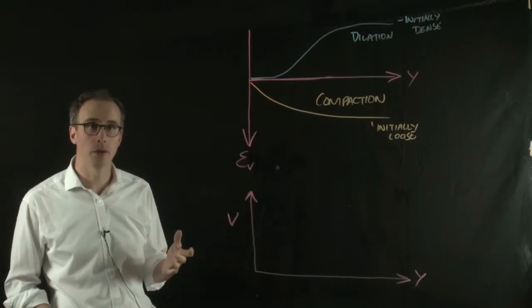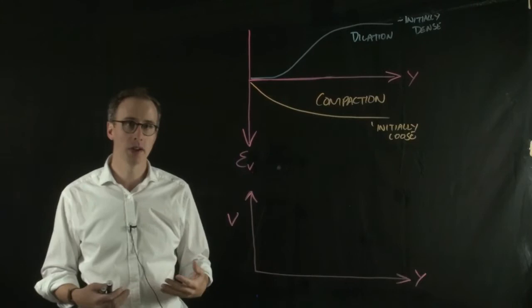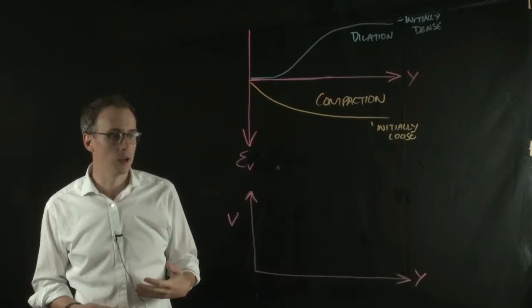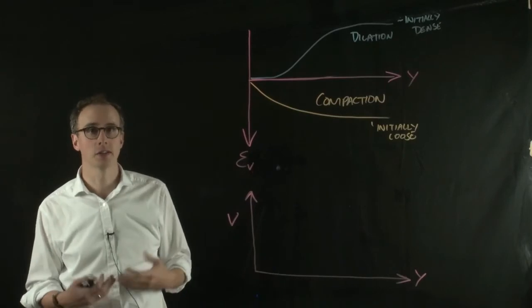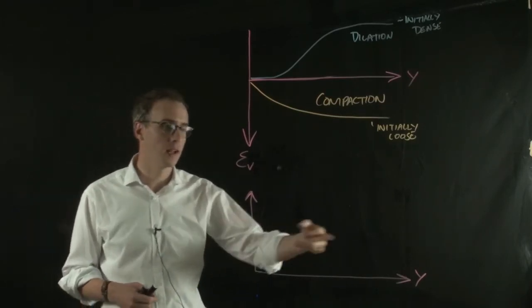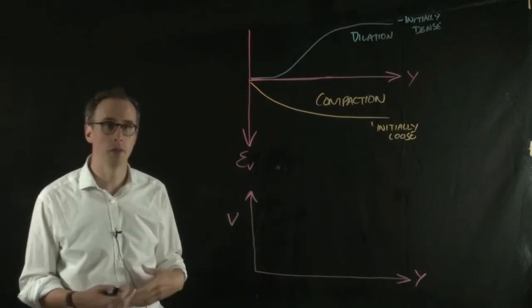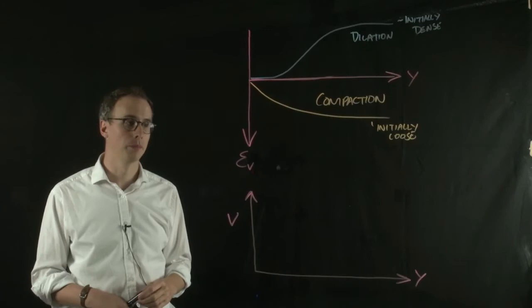So another graph we can plot is a specific volume against shear strain. We can measure the specific volume at the beginning of the test, or the specific volume of the material at the beginning of the test, and then calculate how it changes through time with volumetric strain.